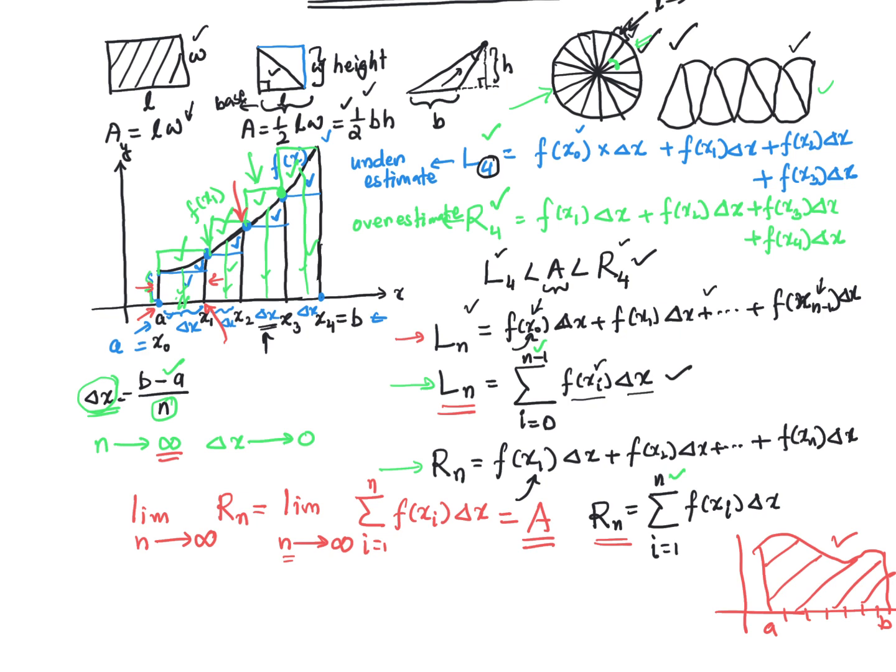This concept — this definition of finding area by slicing into smaller pieces and summing them up — is extremely powerful in calculus. It leads to a new area of calculus called integration. We have done differentiation; now we are going to explore integration. Integration is all about finding the area under a curve or under a function, by slicing into smaller rectangular pieces and adding up their areas. Remember the pizza example.